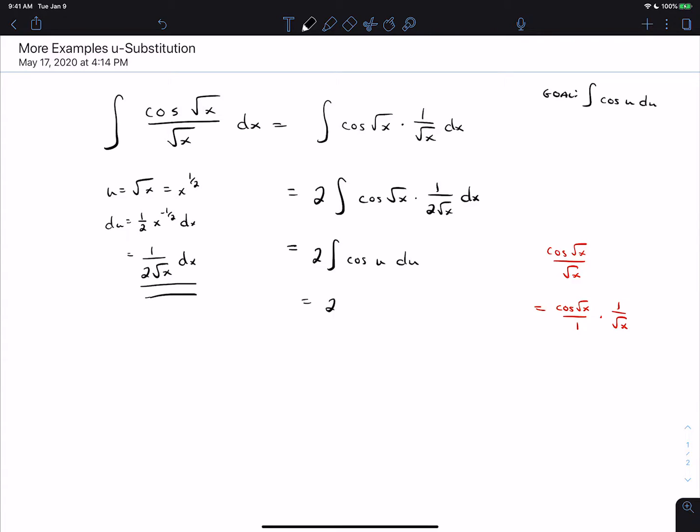Antiderivative of cosine is positive sine. And so we get two sine of u plus c, which is two sine of the square root of x plus c.